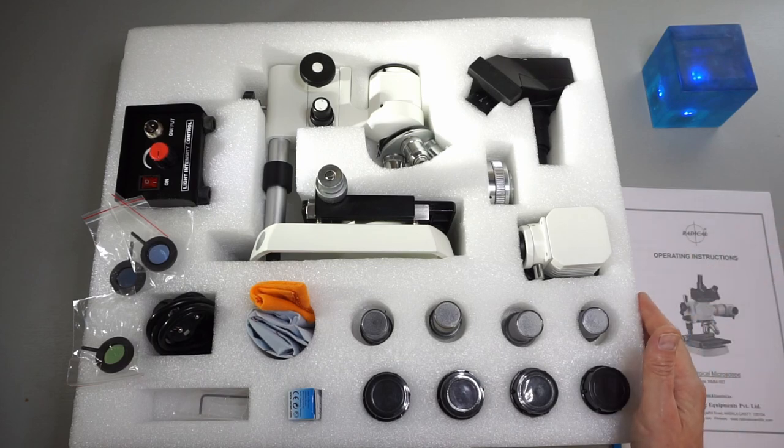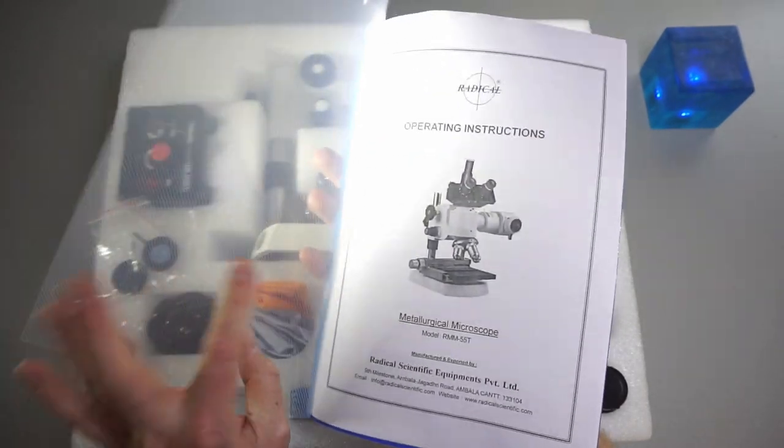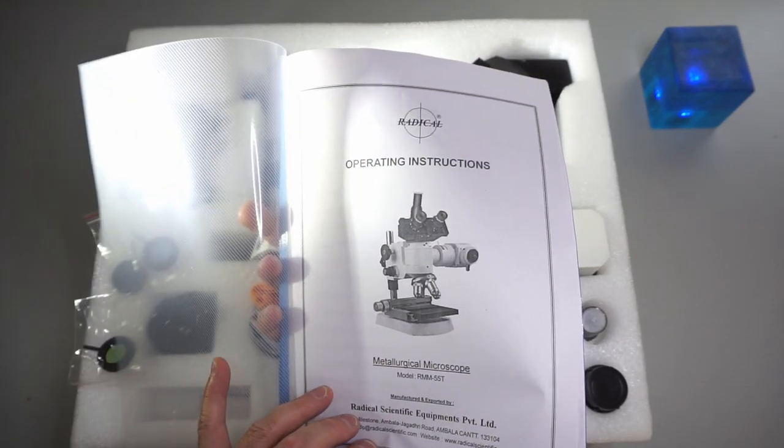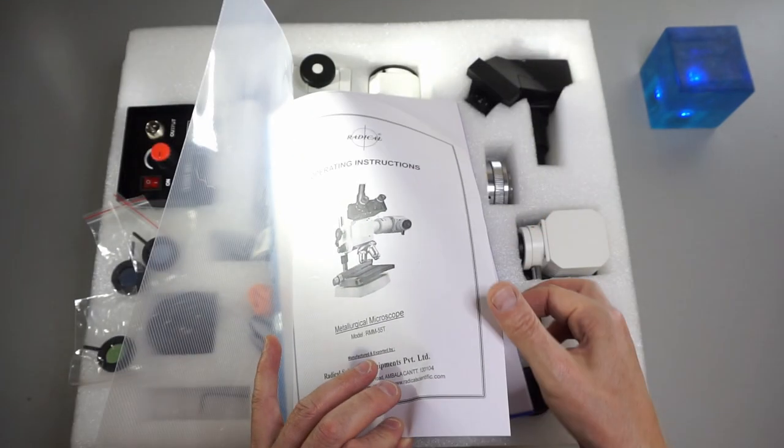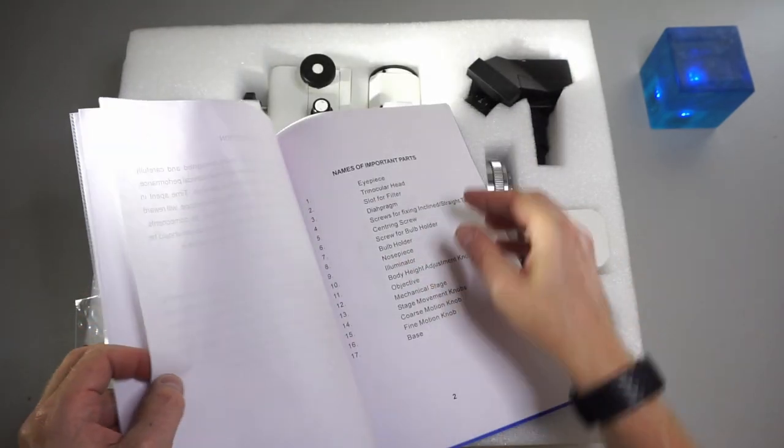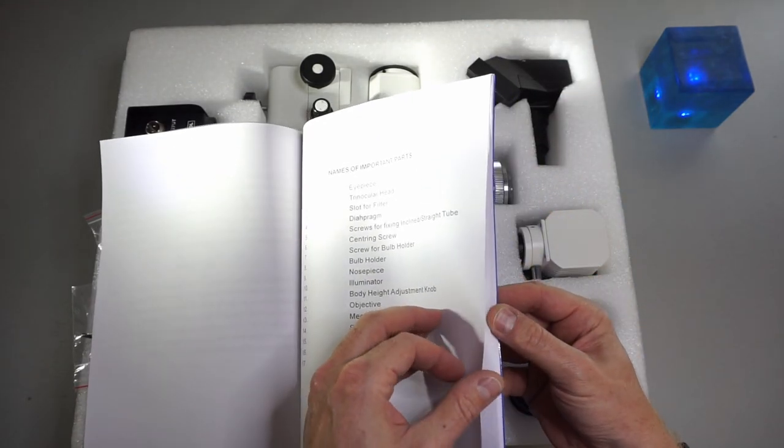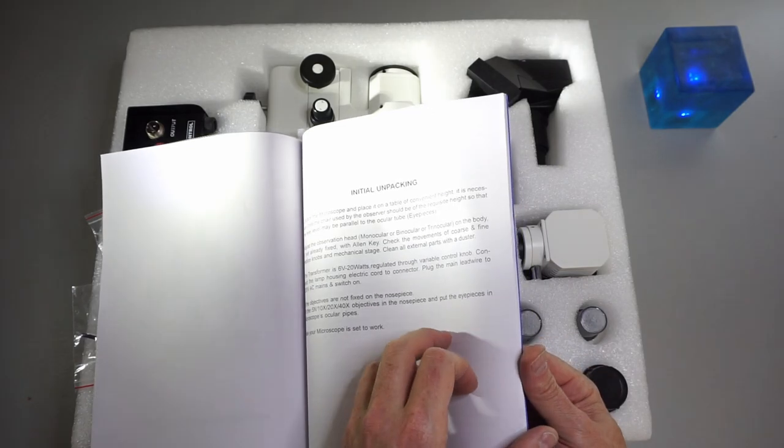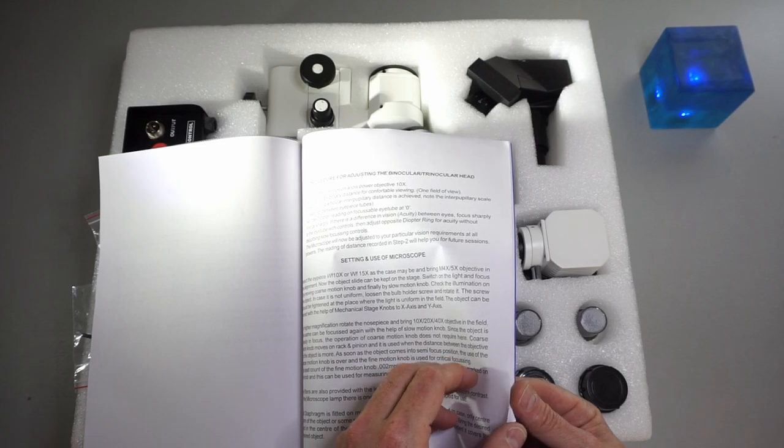Let's see how it looks when everything is set up. Let's maybe have a quick look at the operating instructions. Here's the picture of the microscope in this stage when everything is mounted. The manual is just copied papers, so rather cheap. It describes the important parts.